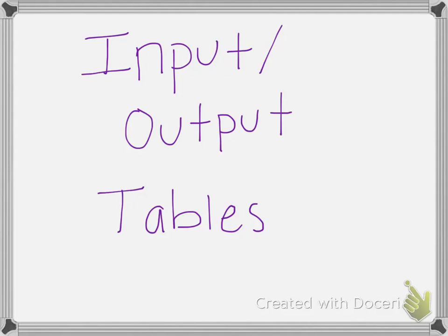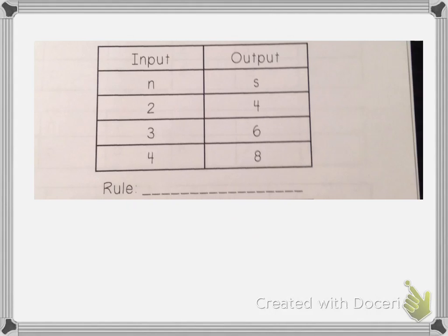We have to make sure we test the rule for every pair. So here we have an example of an input-output table. Our input is shown with the letter N, and the output is shown with the letter S. When we talk about the pairs of numbers, we're looking at the relationship between what goes in and what comes out.